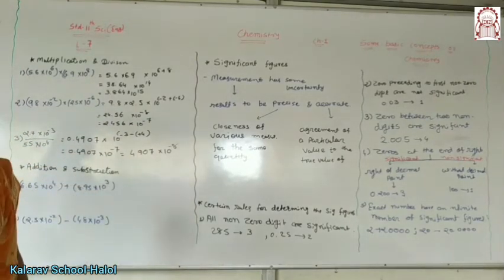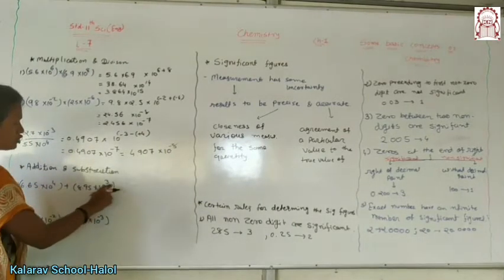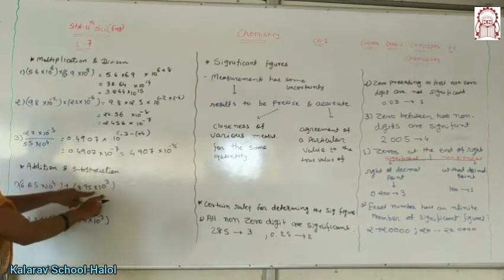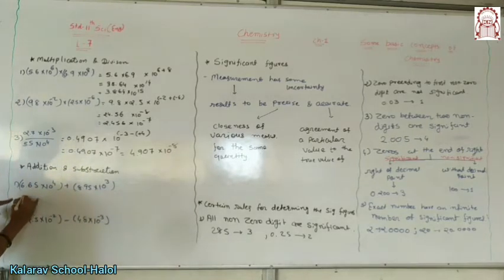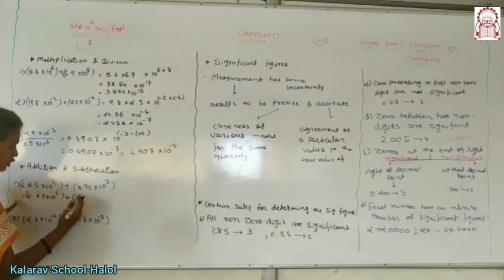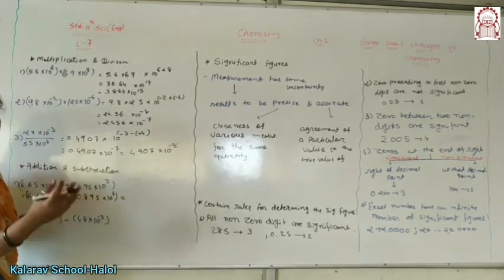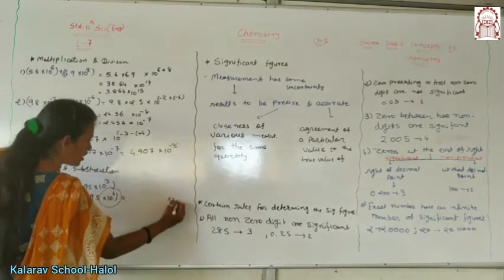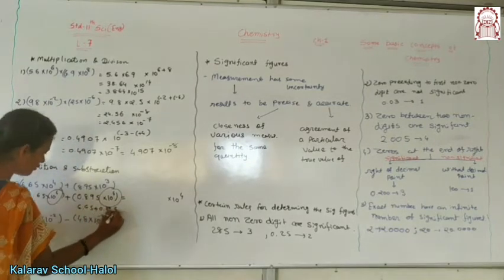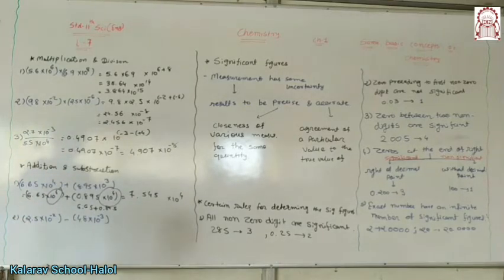Next is addition and subtraction. For addition and subtraction, the powers must be the same. Here we have 10^(-4) and 10^(-3). We convert to 10^(-4). Here we have 6.65×10^(-4). Here we do a right-to-left move to get 0.895×10^(-4). Now for addition: 6.65 + 0.895 = 7.545. So the result is 7.545×10^(-4).